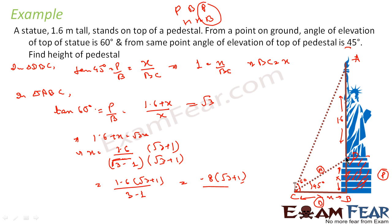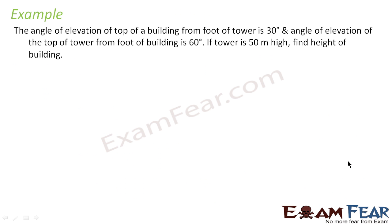So X = 0.8(√3 + 1) meters — that is the height of the pedestal. To summarize: the statue height was 1.6 m and the pedestal height was unknown. We identified the common side in terms of X and used it across both triangles to find the answer. Now let's take another example: the angle of elevation of the top of a building from the foot of a tower is 30°, and the angle of elevation of the top of the tower from the foot of the building is 60°. The tower is 50 meters tall. Find the height of the building.